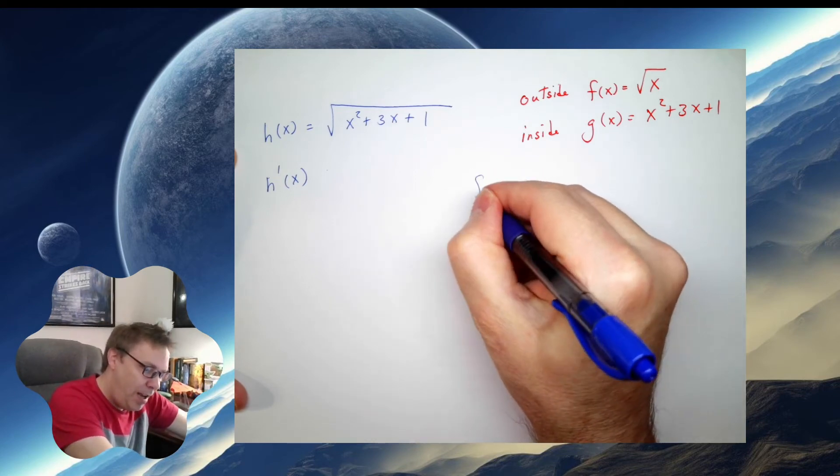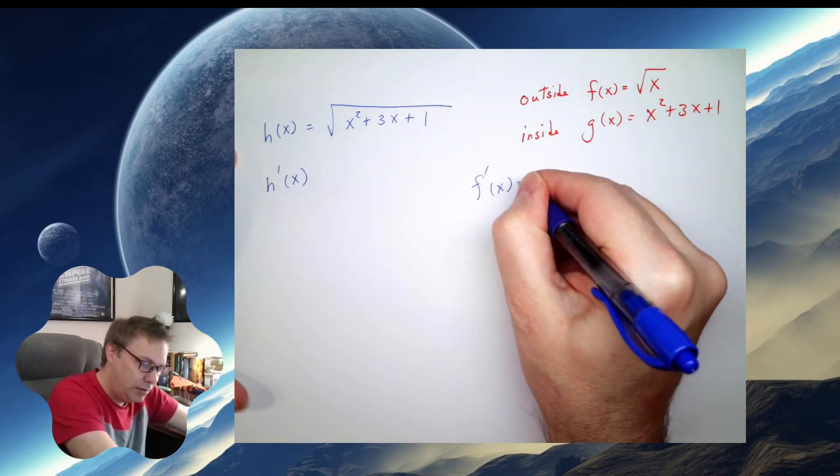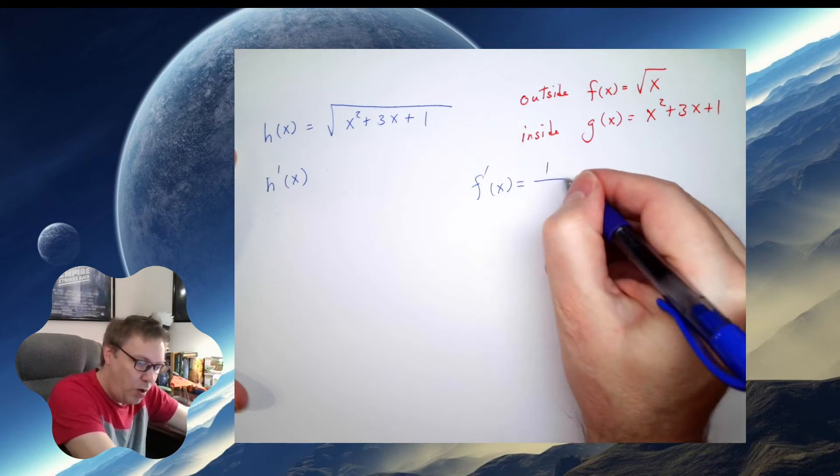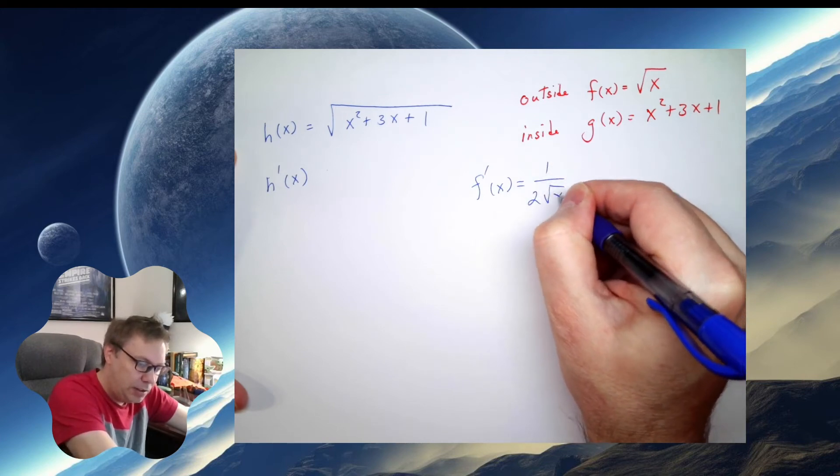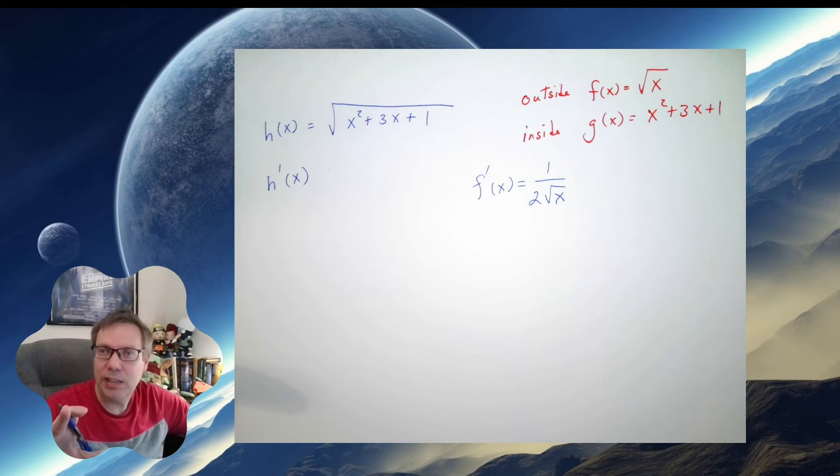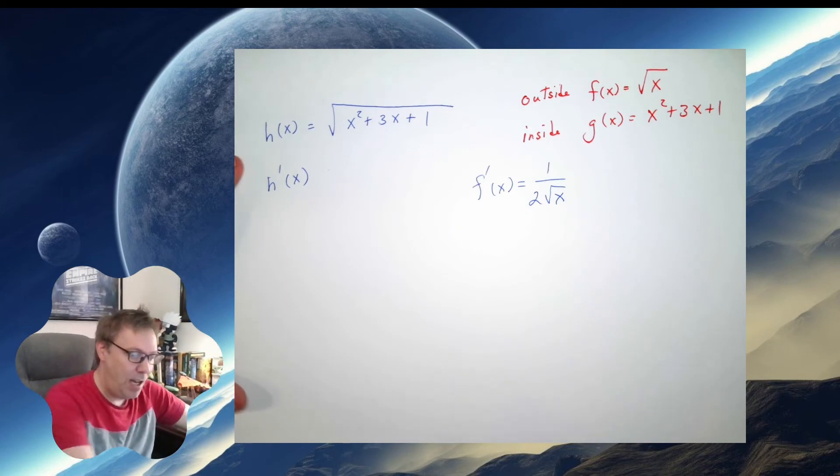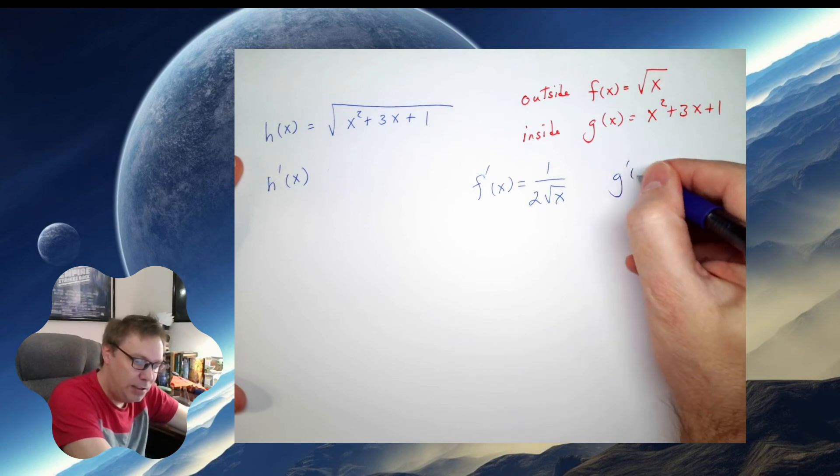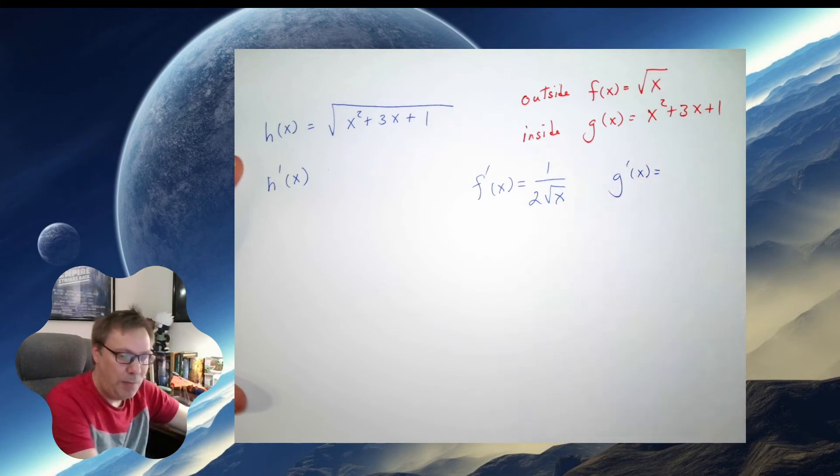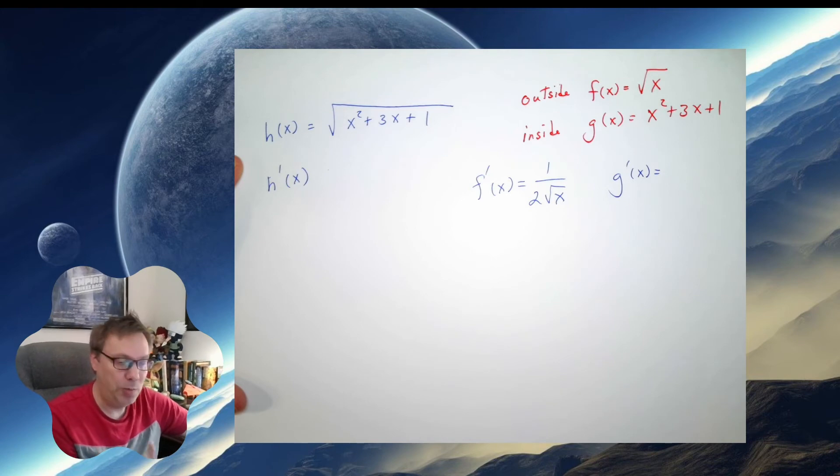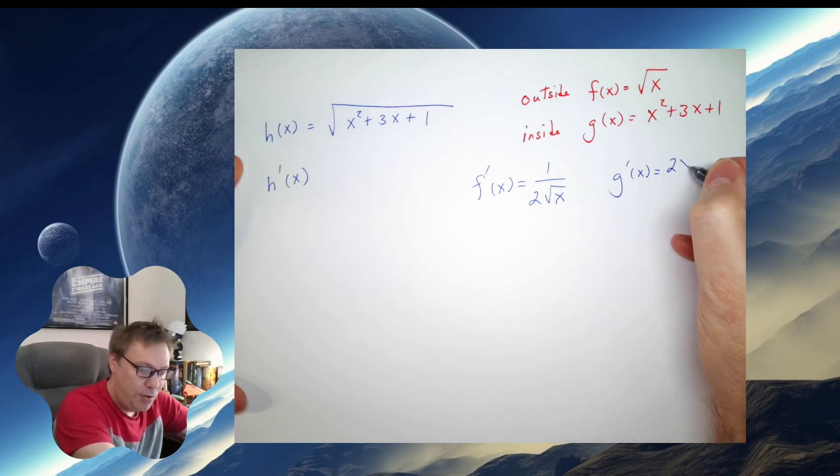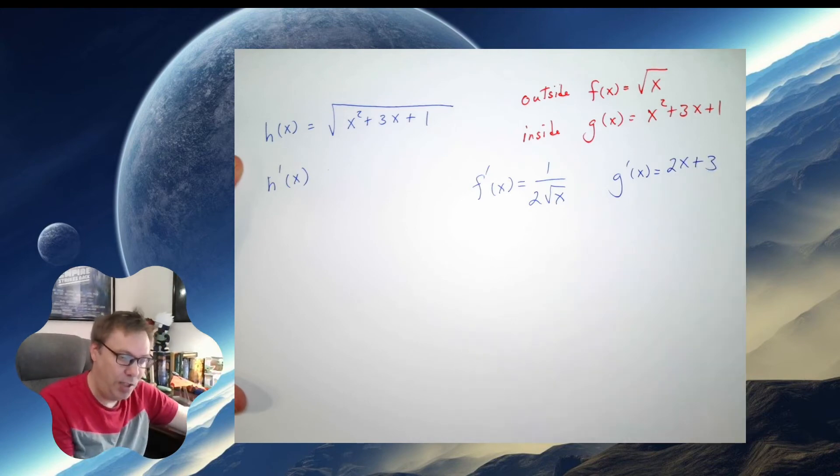Now, I need to figure out f prime of x. Well, this looks like 1 over 2 root x. I'm using the power rule. I skipped a step here, but that's essentially what it looks like. I need to know what g prime of x is. Well, I'm going to use the power rule, the sum rule, and the constant multiplier rule here. I get 2x plus 3.